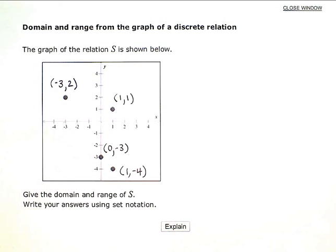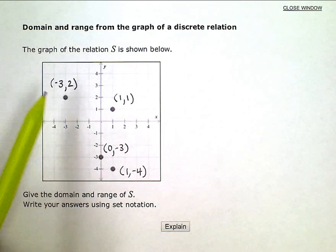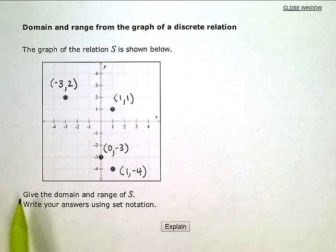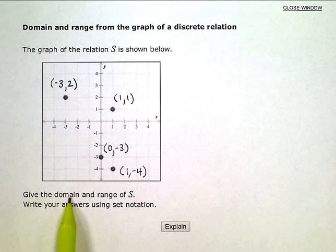Okay, so those are my 4 points, meaning these are the only values in my function, nothing else. So domain are the X values, the inputs.